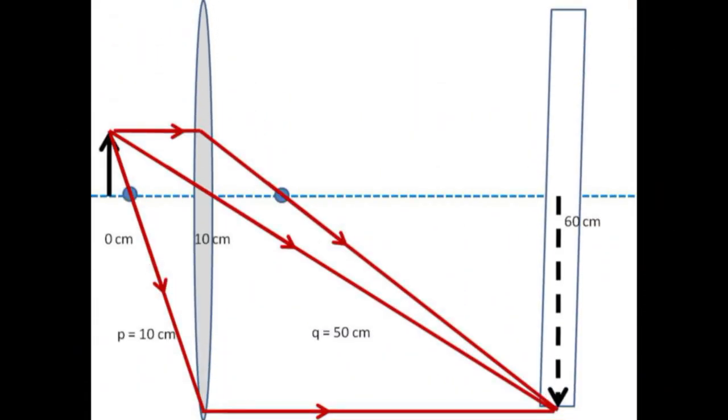Since you will be measuring a number of object and image distances, one way to speed things up is to note that there are actually two conjugal lens locations that will create an image for a given object and screen location.